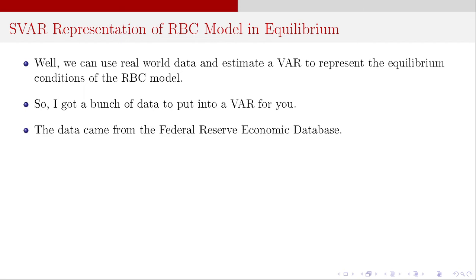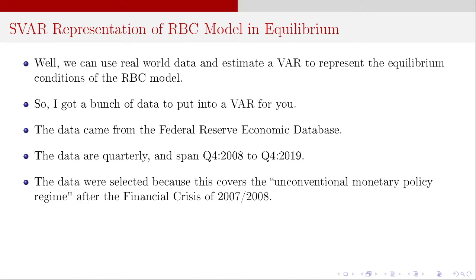So I went out, got a bunch of data, and put it into a VAR. The data came from the Federal Reserve Economic Database. The data are quarterly and span the fourth quarter of 2008 up to the fourth quarter of 2019. I selected this data because it covers the unconventional monetary policy regime that followed the financial crisis of 2007–2008. Since this is essentially a monetary economics course, we're interested in monetary policy, and we need to understand these other shocks to be able to tell the difference between them — but the main focus is the response to monetary policy shocks.